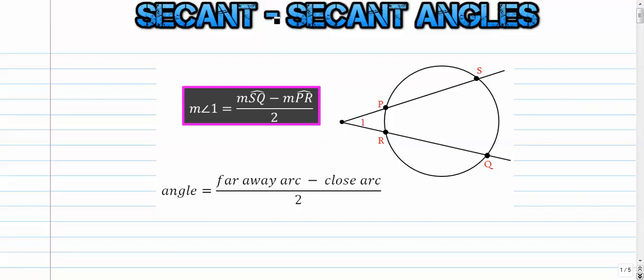Really cool little formula here. The angle in question, angle 1, that angle right in there, is equal to the faraway arc, so whatever this measure is in degrees, minus the close arc, divided by 2.